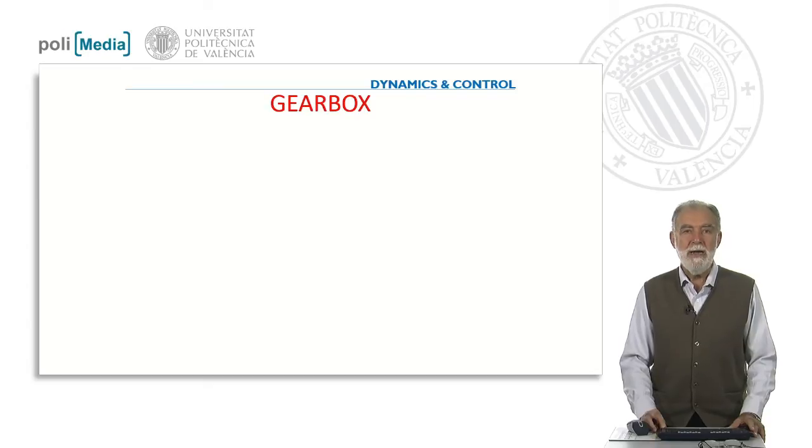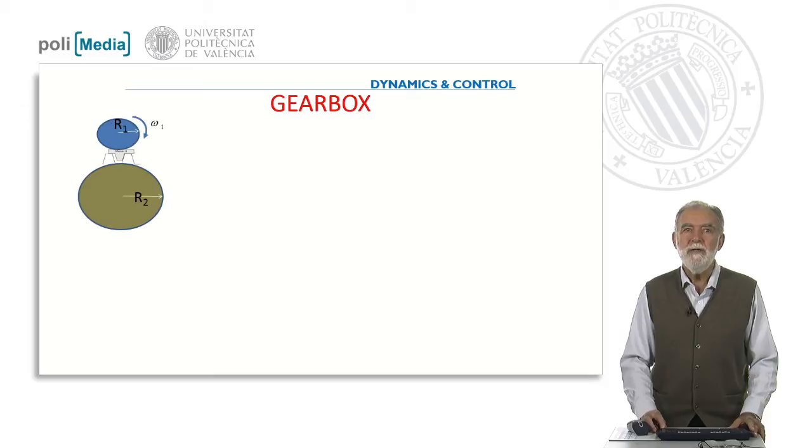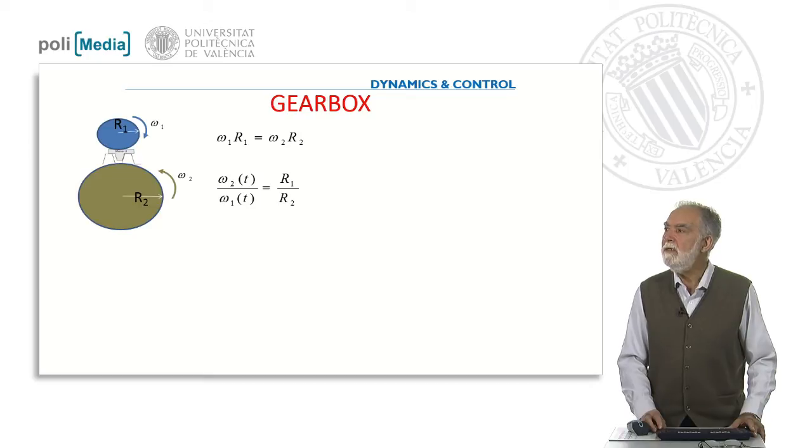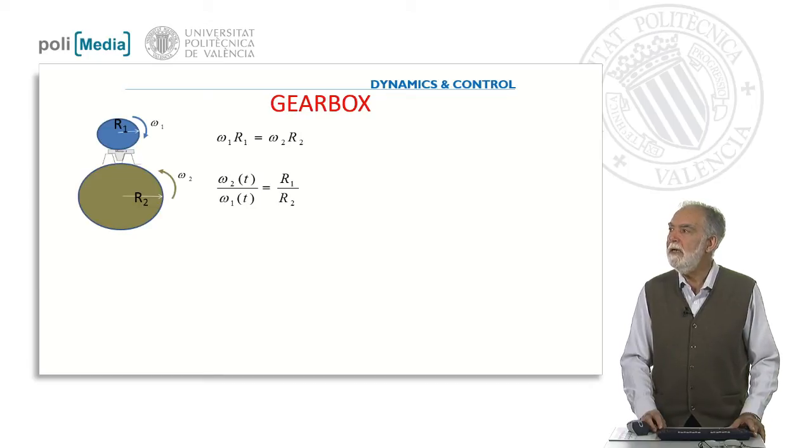So this is another mechanical device. It's a gearbox. As you all know, the gearbox is composed of two axes rotating in different directions. It's very easy to write the relationship between the speeds. It depends on the ratio. So the two angular speeds ω₁ and ω₂ are related with the radius of the axes.